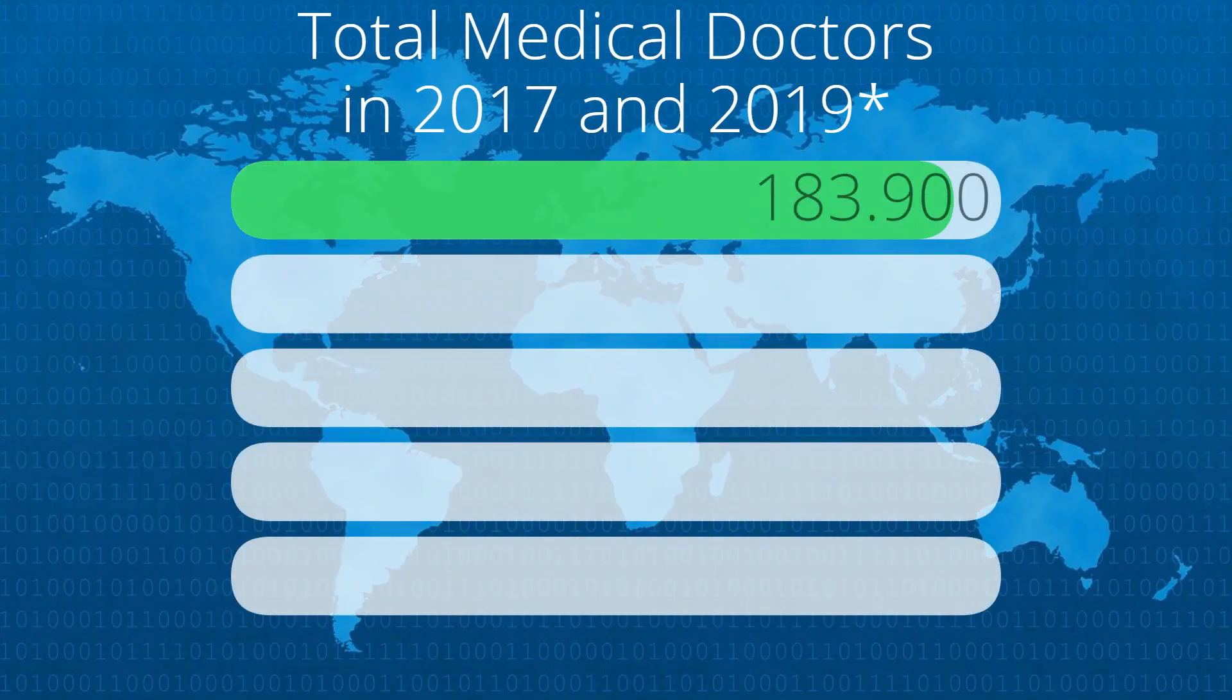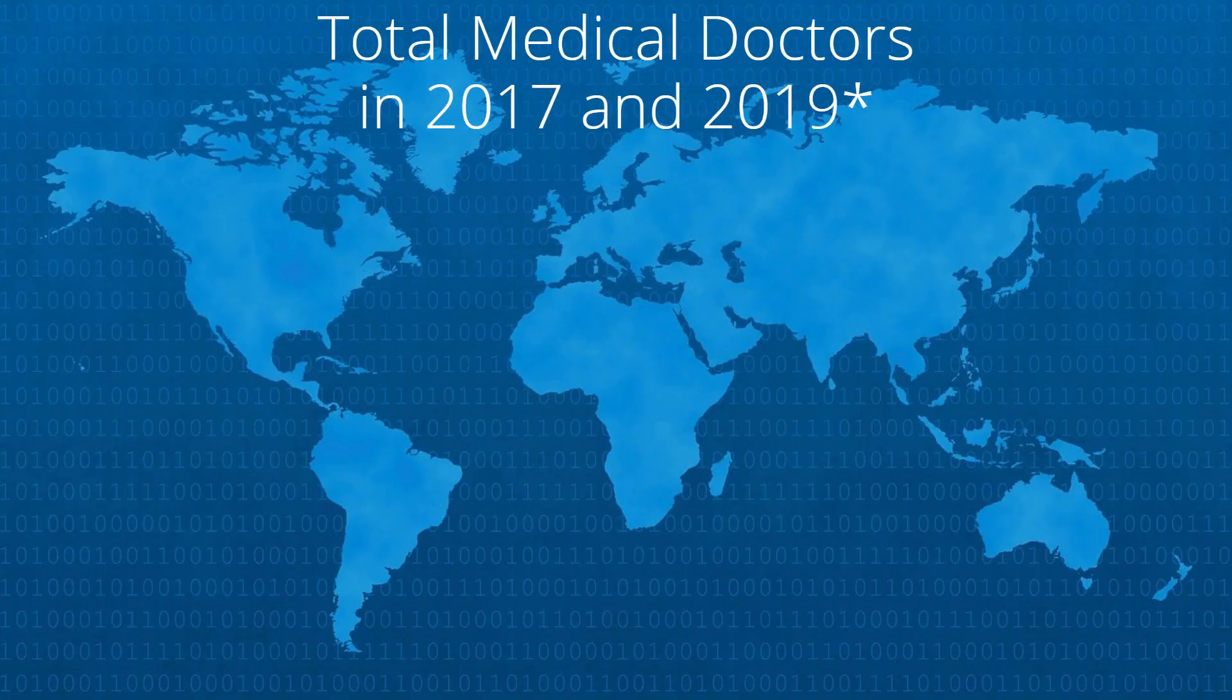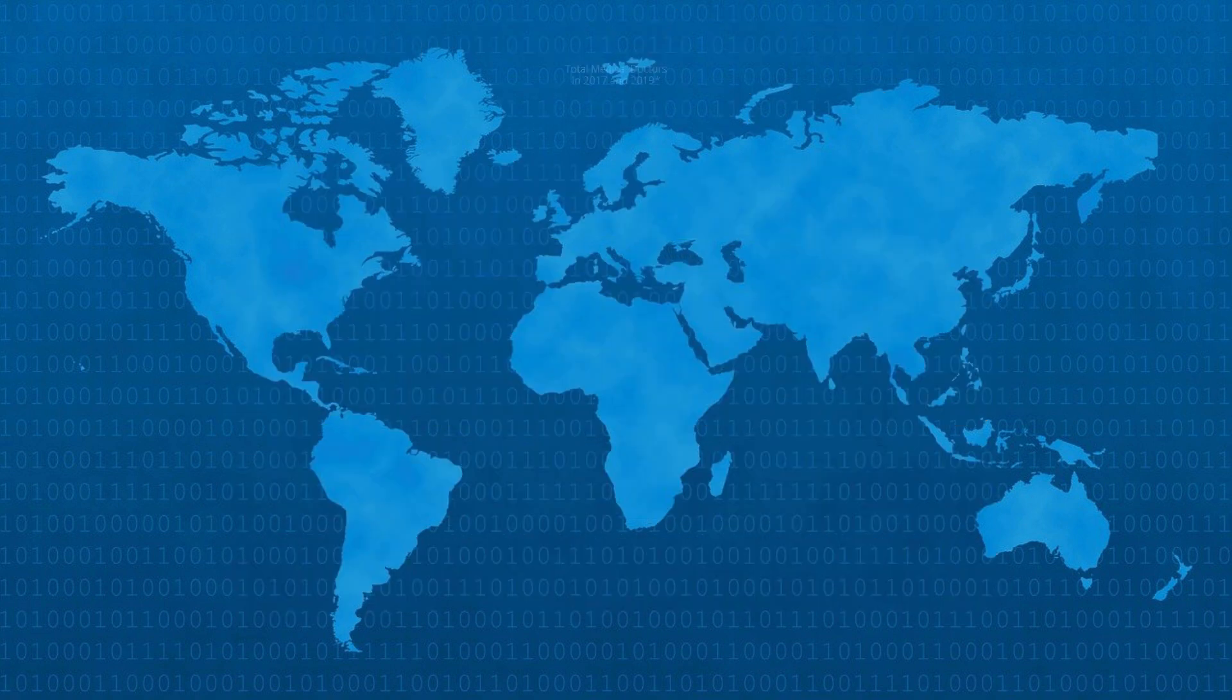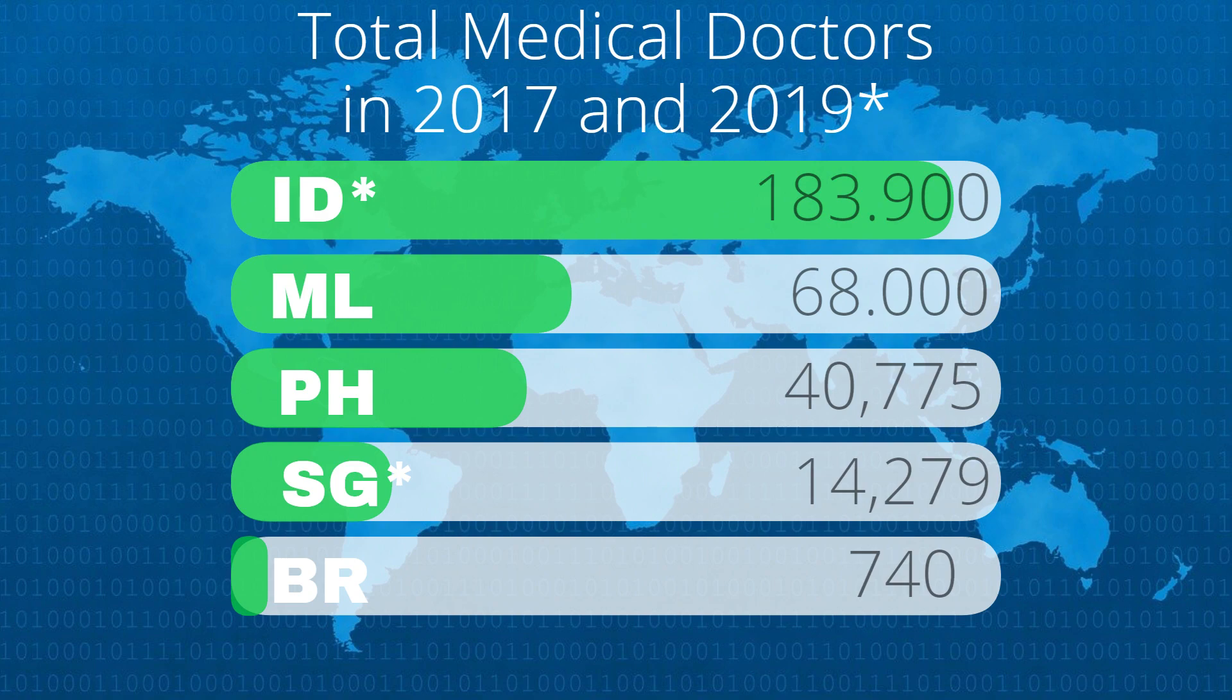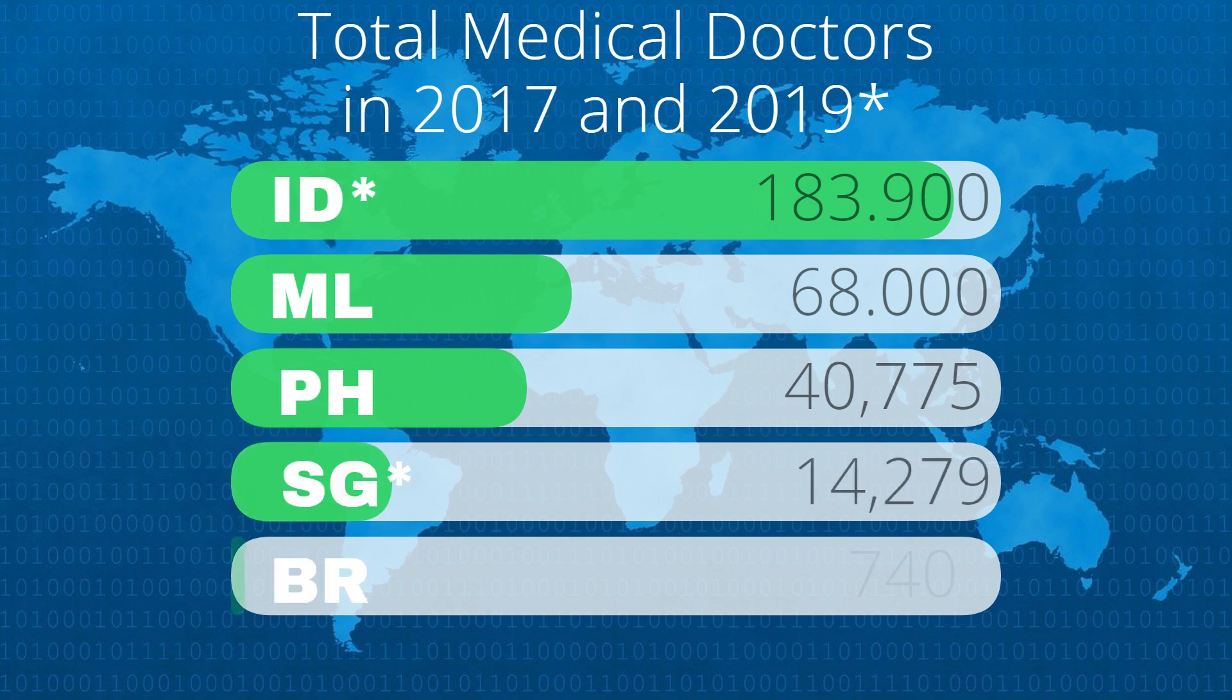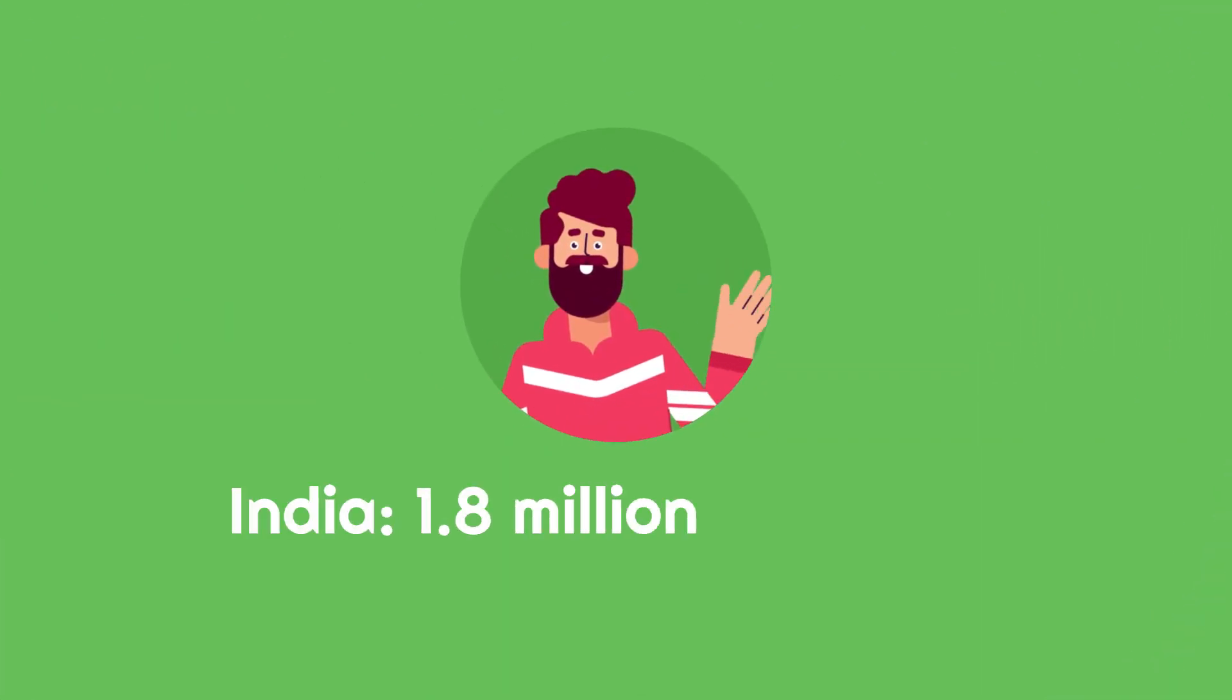By 2017 or 2019, Indonesia had the highest number of medical doctors of 183,100. Malaysia had the second highest of 68,000 doctors, Philippines followed by 14,775 doctors, while again, Singapore and Brunei had the least number of doctors of 14,279 and 740 doctors respectively. For comparison, India had 1.8 million medical doctors. Wow!